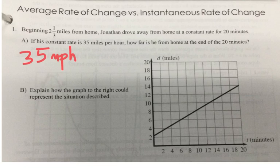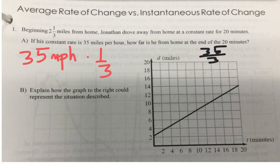Well, 20 minutes is what fraction of an hour? You could think of it as 20 over 60, which simplifies to be one-third. So he's traveling a third of that distance. So I would do 35 miles an hour times a third. That's going to leave me with 35 third miles.